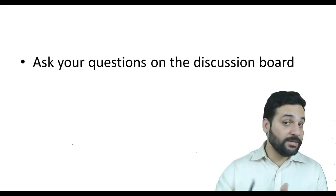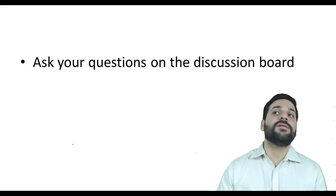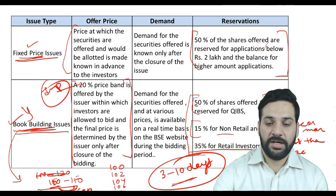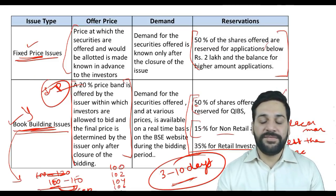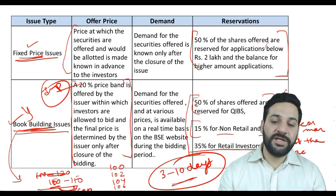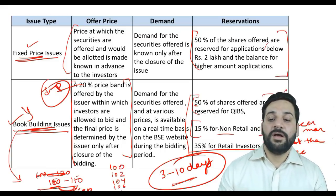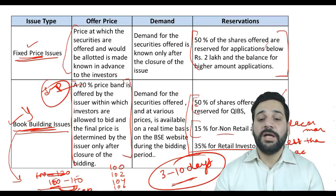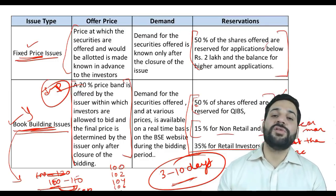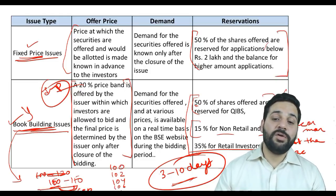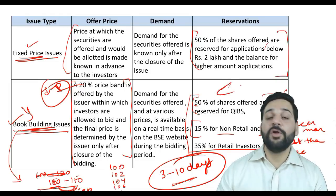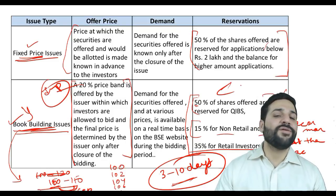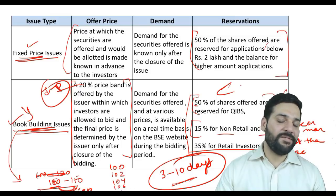I am remaking this lecture because on BSC's official website the percentages were stated incorrectly — it mentioned 15% for retail and 35% for non-retail, which is wrong. The correct numbers are 35% for retail and 15% for non-retail, as per SEBI's official guidelines. I request all students to follow the correct figures, and I will issue a proper notification to rectify this mistake. Thank you and have a nice day!